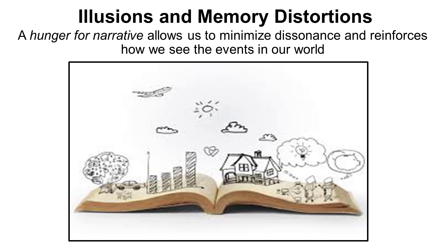We will now focus on the second learning objective: defining nine types of illusions and memory distortions. I grew up in a small town in northwestern Ohio and went to college near Detroit, Michigan. When I found myself having difficulty making new friends, I told myself it was because I was from a small town with a population of 1,200, where everyone essentially looked the same, went to the same churches, and generally lived in the surrounding area after high school graduation. We call this a hunger for narrative.